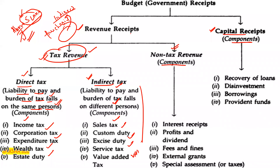Under non-tax revenue, first we have interest receipts — earnings from interest. Second is profits and dividends. For example, if the government has invested in a company, after the financial results each year they receive profit or dividends from that company.